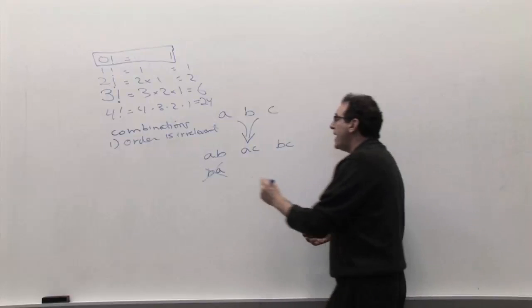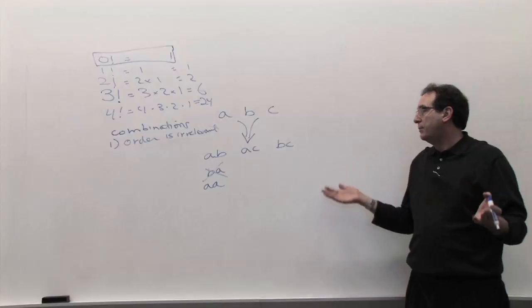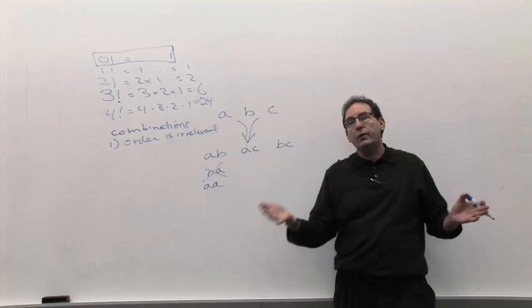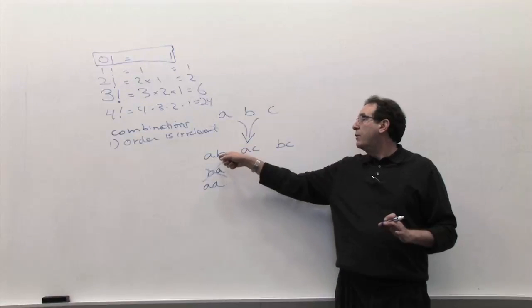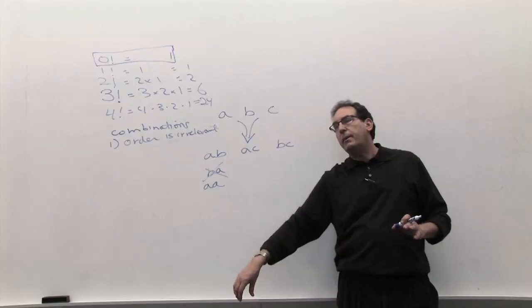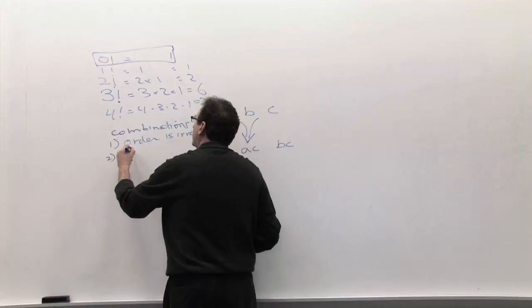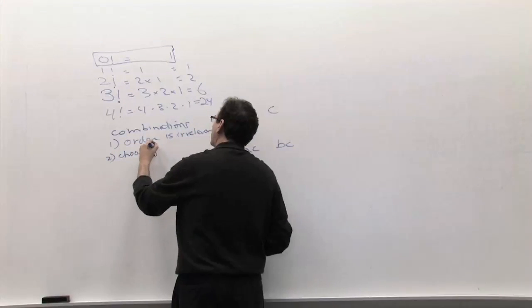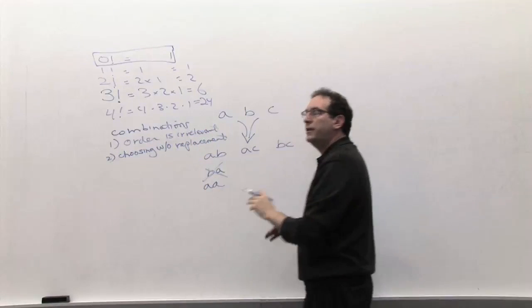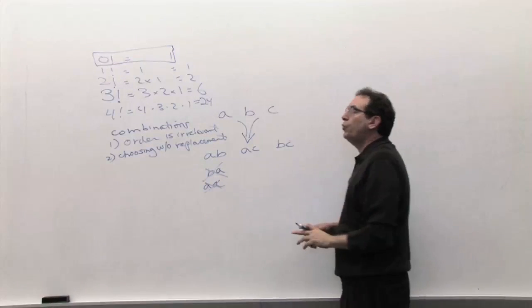Somebody might ask, what about why not having A and A? The same person can be chosen twice. Well, in some situations, for example, rolling a die, you get a three. You roll it a second time, you get another three. You get a three and a three. Well, in this example, we're making the assumption that once somebody's chosen, they're not put back into the pot to choose them a second time. They only get chosen once. So, the second thing is called choosing without replacement. Once you're chosen, you can't be chosen twice. In other words, you can't have A, A, or B, B, or C, C.